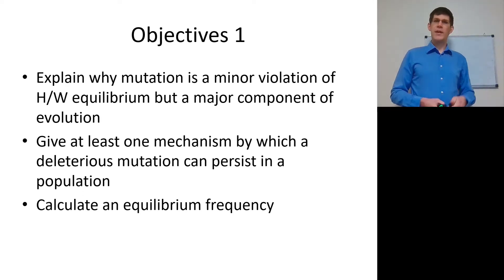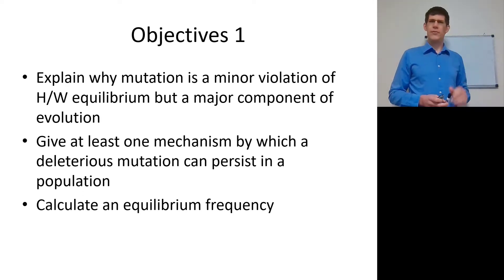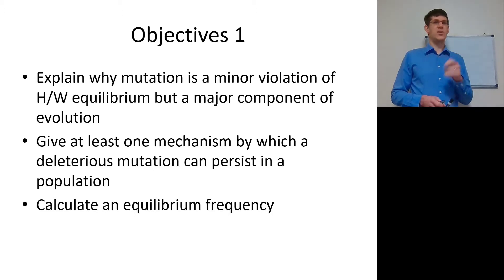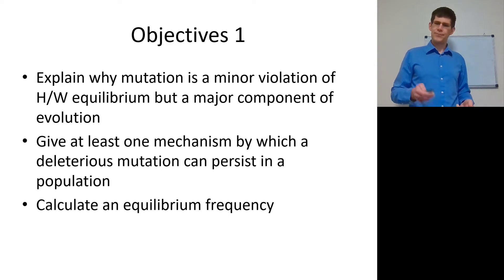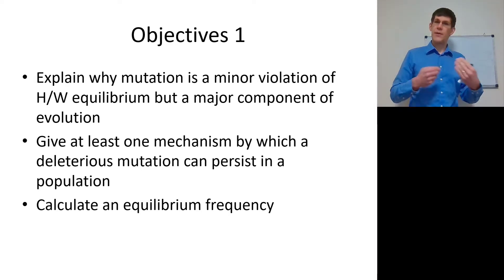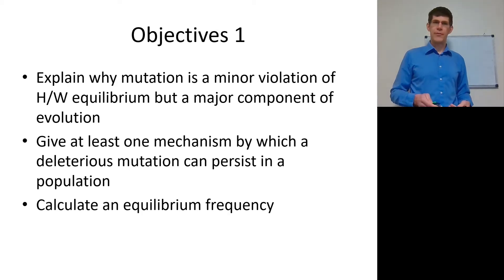First off, explain why mutation is a minor violation of Hardy-Weinberg equilibrium but a major component of evolution. Give at least one mechanism by which a deleterious mutation can persist in a population and be able to calculate an equilibrium frequency — using the equation, not the numbers.